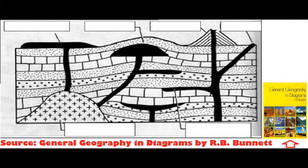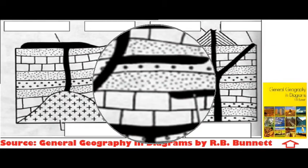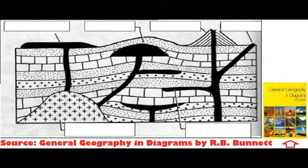On your screen right now you're going to see a diagram which contains many volcanic features — many that are extrusive and many that are intrusive. Really and truly, they would not all appear in the same place; that is physically improbable. This diagram is created so that you can learn all the features in one go. I got this diagram from 'General Geography in Diagrams' by R.B. Bonnet — it's a popular geography book. I'm going to put some definitions on the screen, then bring back the diagram, and you're going to reason out which definition goes with which feature.